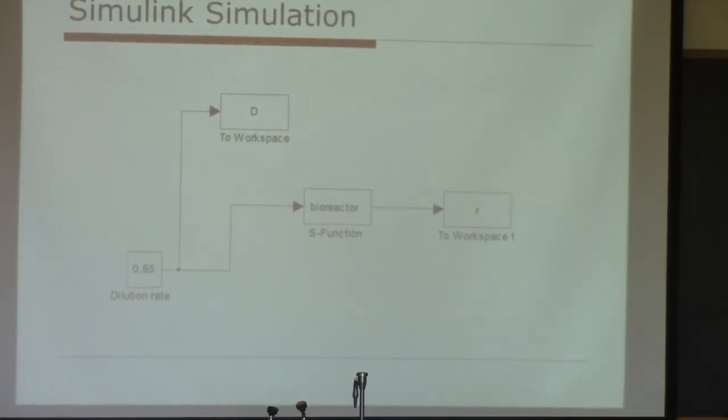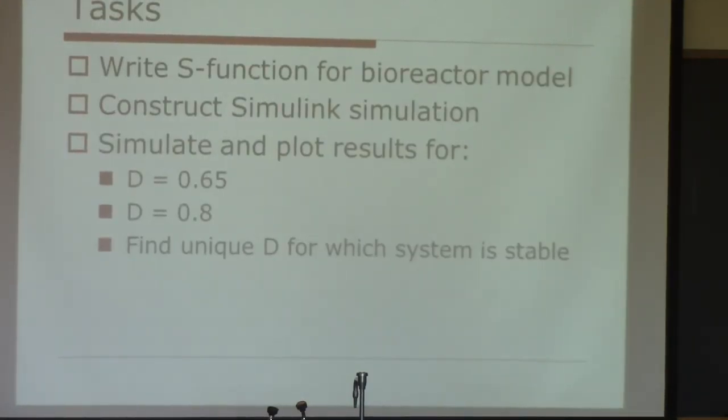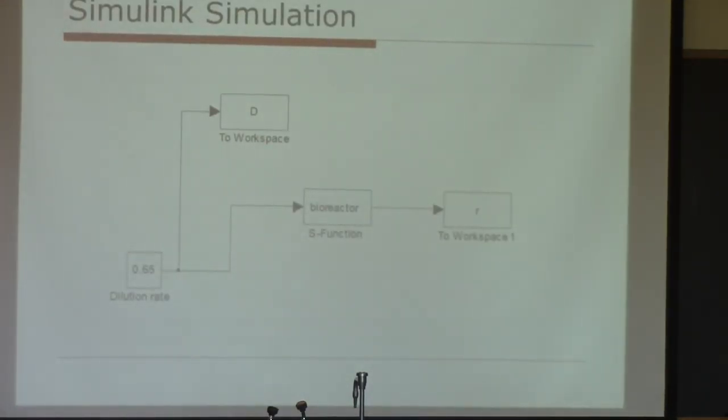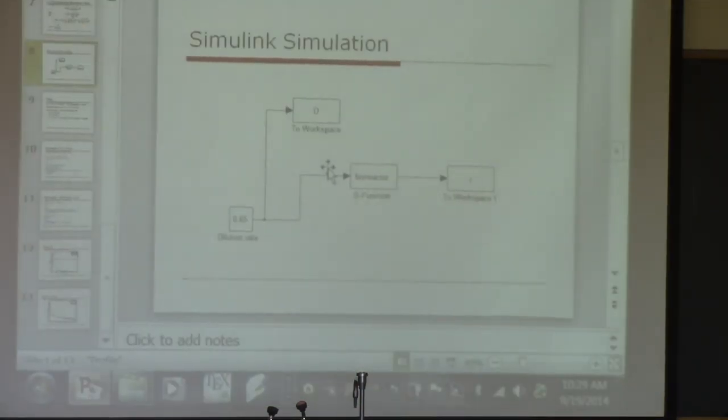A reasonable output for this system is the fraction of X: X divided by the total cell concentration (X + Y). If this fraction is one-half, we have equal amounts of X and Y. If it's zero, there's no X; if it's one, there's no Y. So this is what we track. Let me show you what this looks like in Simulink.